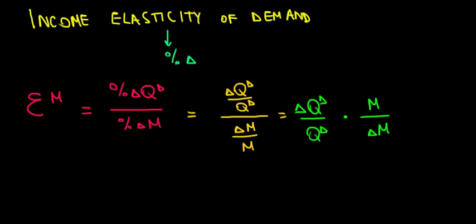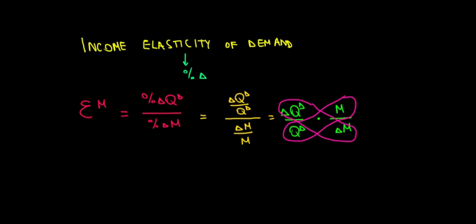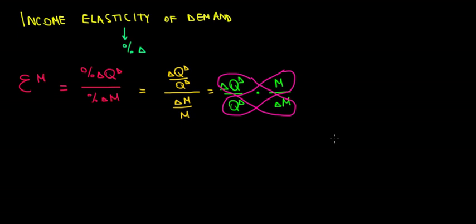Let's group these two together. That would be equal to the change in quantity demanded divided by the change in income, times M divided by quantity demanded.